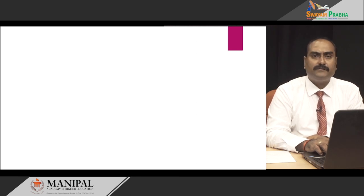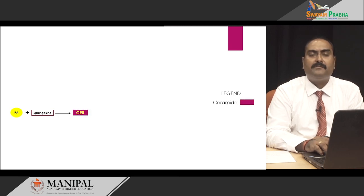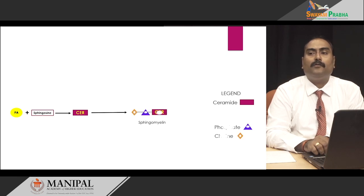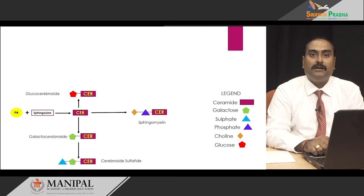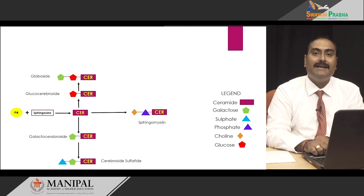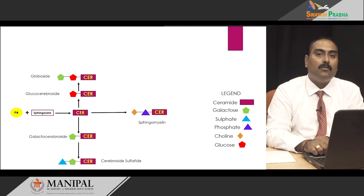Looking at the structure of a sphingophospholipid: it is made up of an alcohol called sphingosine and a fatty acid, which together combine to give us ceramide, the basic structural unit of a sphingolipid. Ceramide can be converted into sphingomyelin by adding a phosphate and a choline group. Ceramide can also be converted to galactocerebroside by adding a galactose residue, and to this galactose residue a sulphate group can be added, forming a cerebroside sulphate. Ceramide can also be converted to glucocerebroside by adding a glucose molecule. When one extra carbohydrate moiety is added to an existing carbohydrate moiety, it is no longer a cerebroside — it is known as a globoside. By definition, cerebrosides have one monosaccharide unit, whereas globosides have more than one monosaccharide unit.